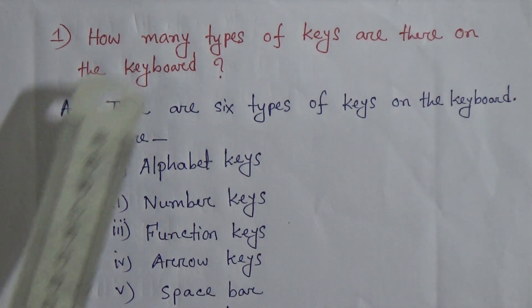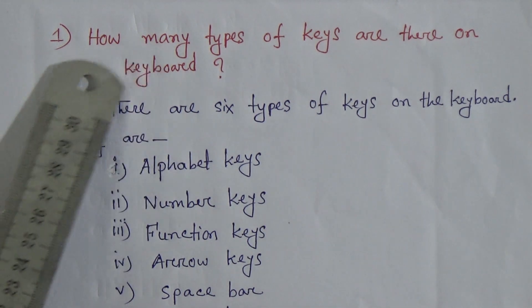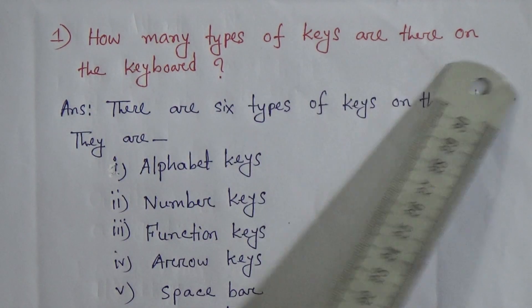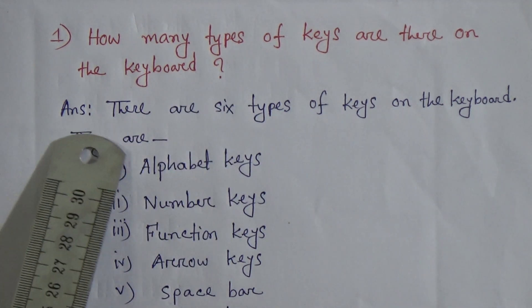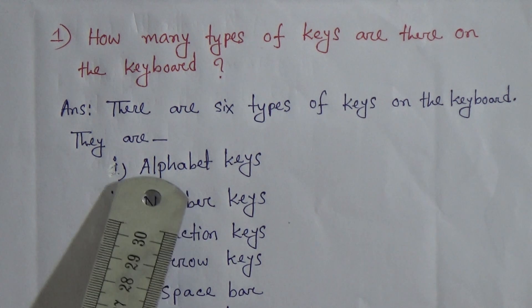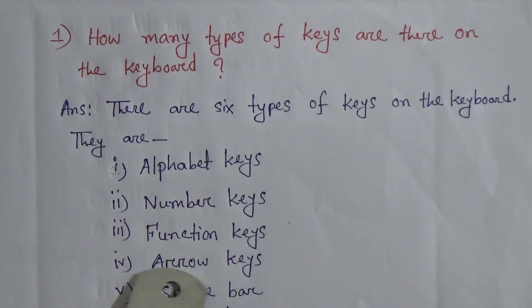Now, I am going to read this topics again. Now, number 1, how many types of keys are there on the keyboard? Answer of this question is there are 6 types of keys on the keyboard. They are alphabet keys, number keys, function keys, arrow keys, space bar and enter key.